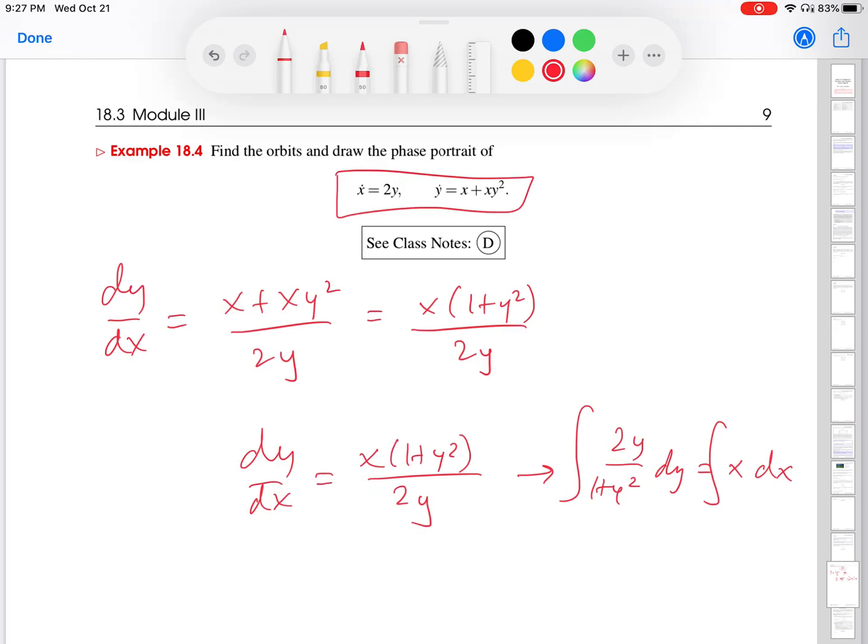So I integrate both sides here. The left-hand side is effectively a u substitution. This is u, 1 plus y squared. And then du would be 2y dy. So this integral is integral of 1 over u du. And that we know is the natural log of the absolute value of u. I'm omitting the plus c because I'm going to put it on the right-hand side.